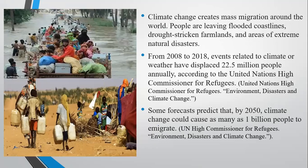Climate change, or global warming, creates mass migration around the world. People are leaving flooded coastlines, drought-stricken farmland, and areas of extreme natural disasters. From 2008 to 2018, climate- and weather-related events displaced about 22.5 million people annually, according to the United Nations High Commissioner for Refugees. Some climate activists have forecasted that by 2050, climate change could cause as many as 1 billion people to immigrate or be dislocated from their original land or region.